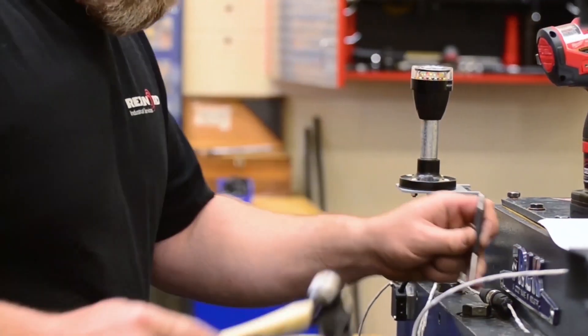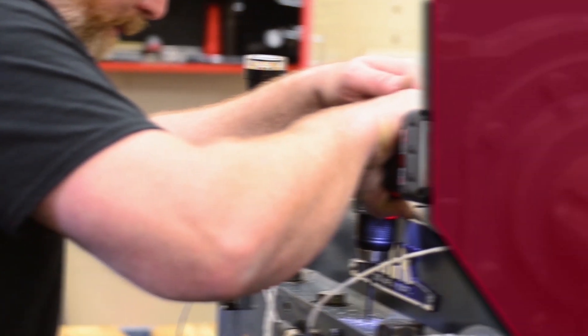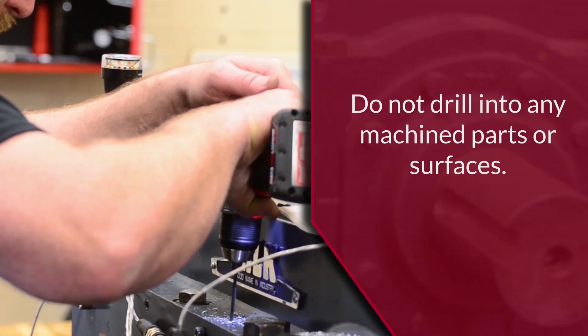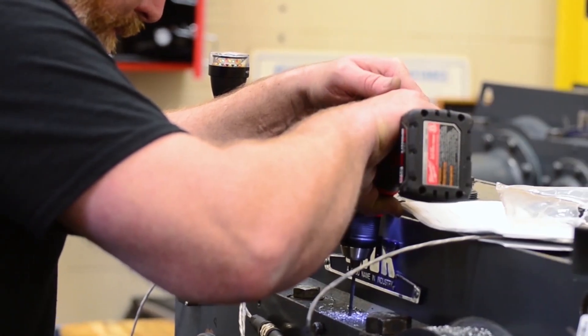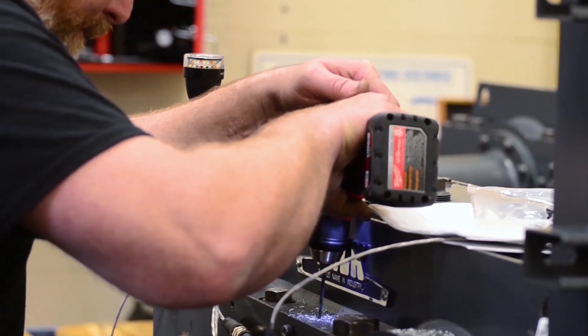Cable tie mounts can also be secured with the number 8 drive screws. Use a number 27 drill bit and drill to a maximum depth of 0.15 inches. Hammer the drive screws into the holes to secure the clips.